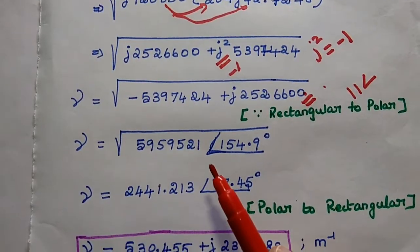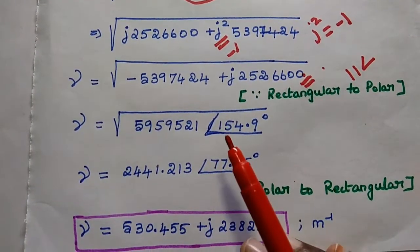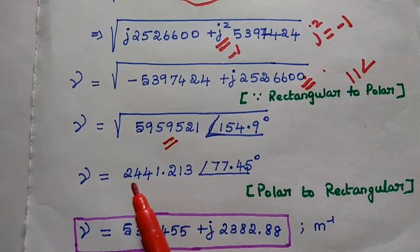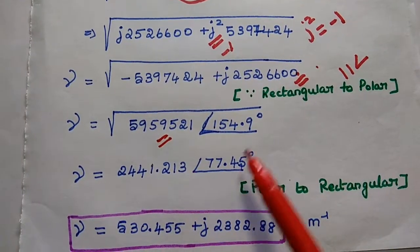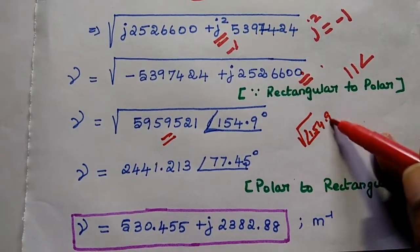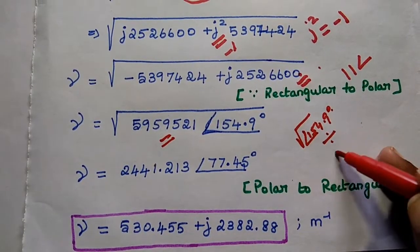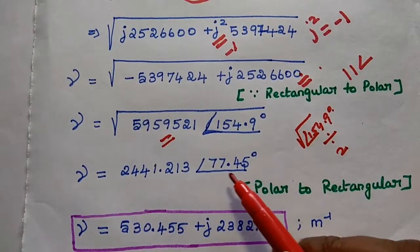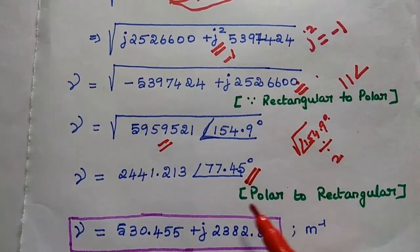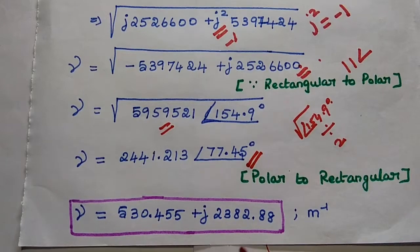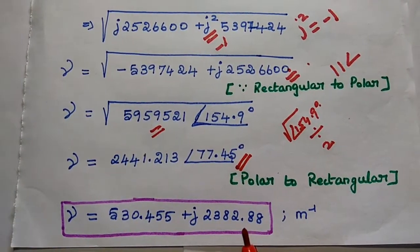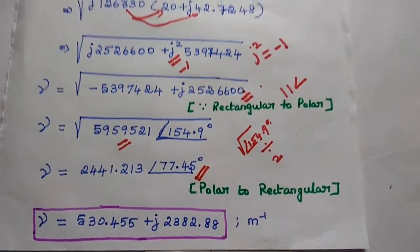After getting this polar form, we are going to take the square root value. For the magnitude, you can straight away take the square root, giving 2441.213. For the angle, to take the square root simply divide the angle value by 2, giving 77.45 degrees. This is the propagation constant value in polar form, but we want to get the rectangular form.